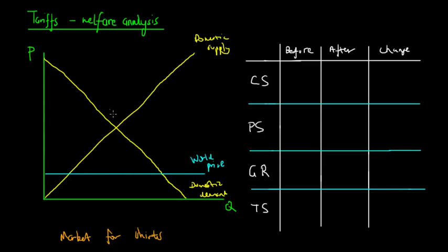Australia is a small country and cannot affect the world price through its domestic supply and demand. So the world price is also the price without tariffs. The consumer surplus without tariffs is this large triangle, showing the excess consumers are willing to pay relative to the world price. The producer surplus is only this small triangle, representing those domestic producers able to produce at a lower price than the world price.